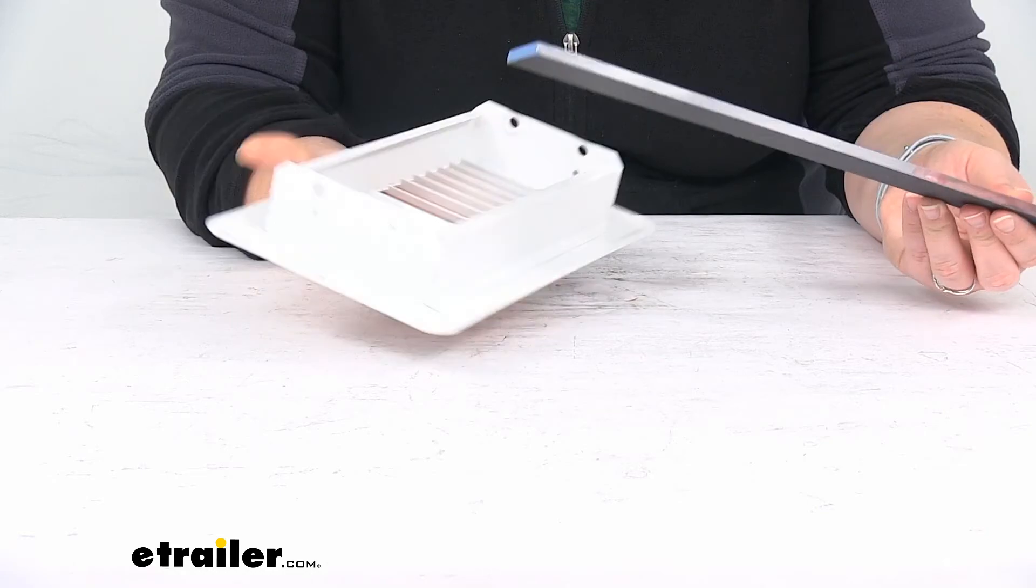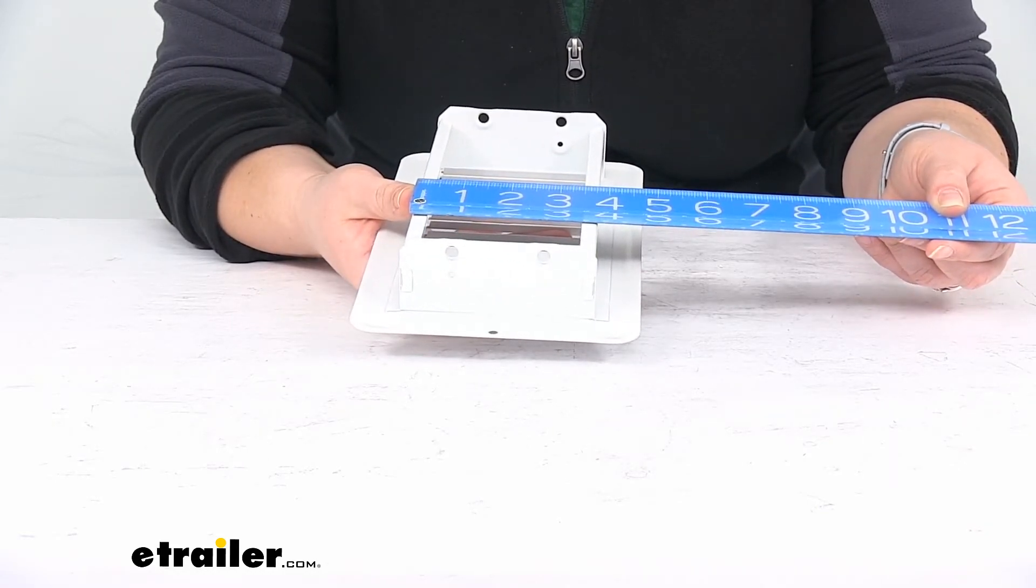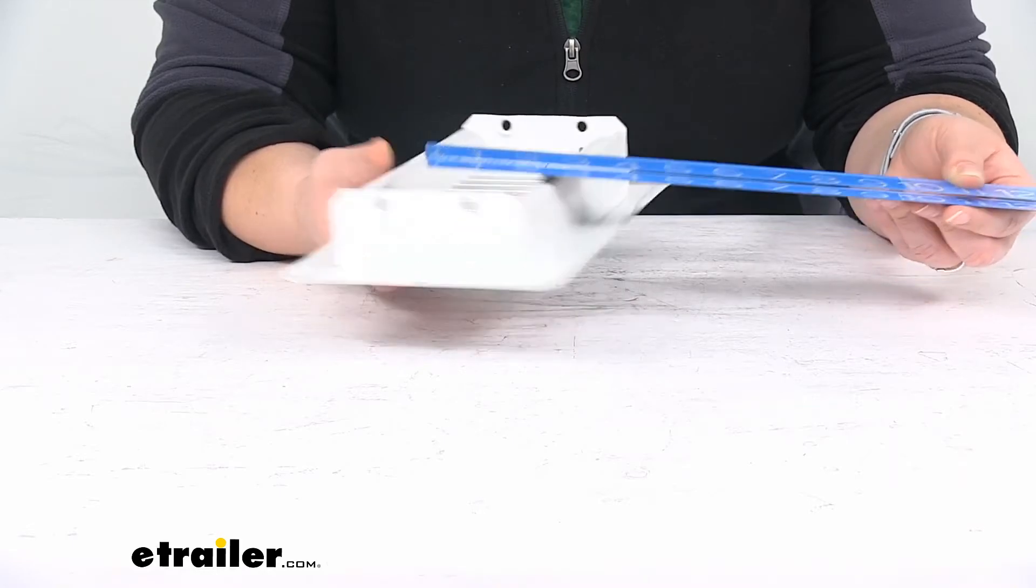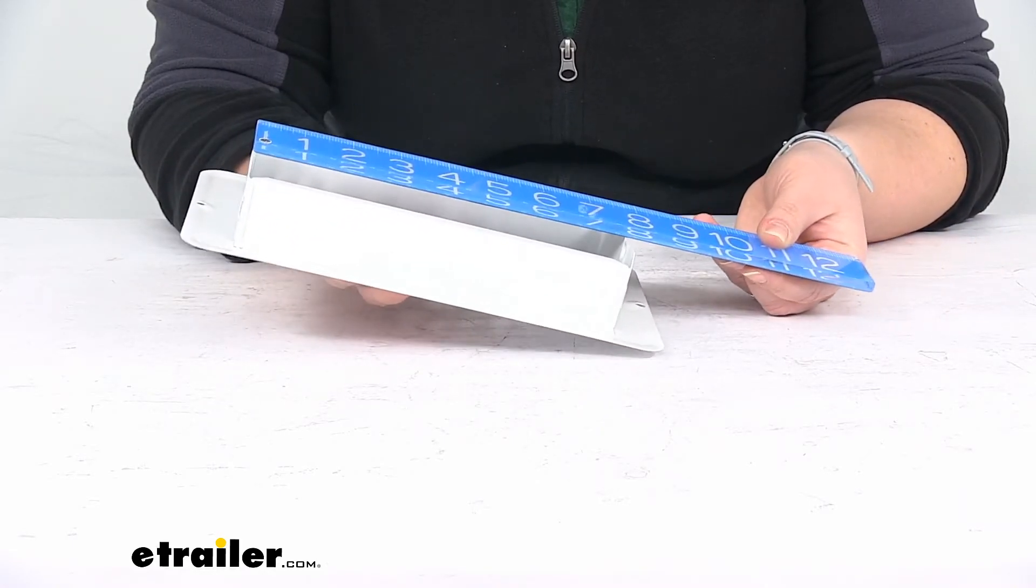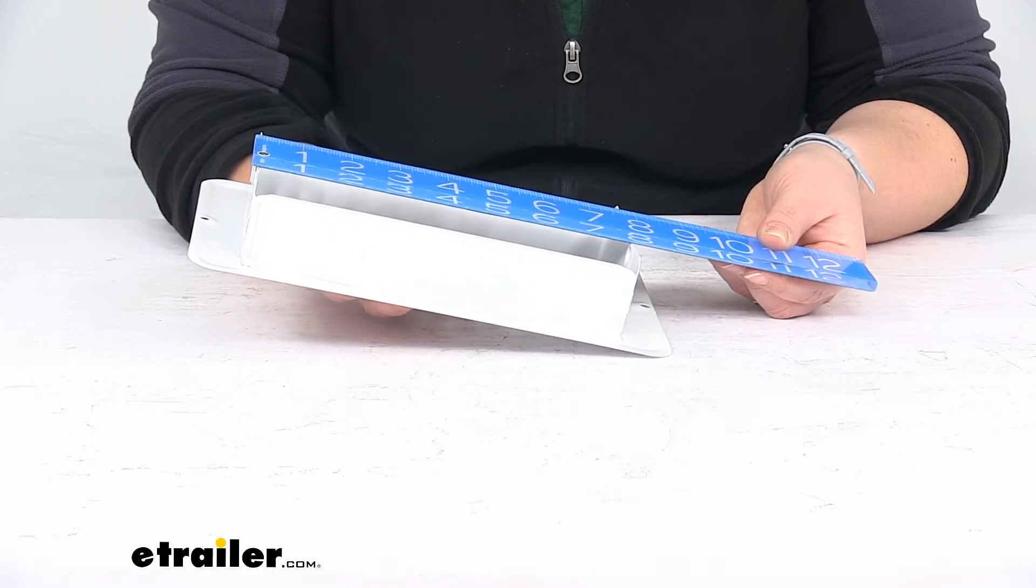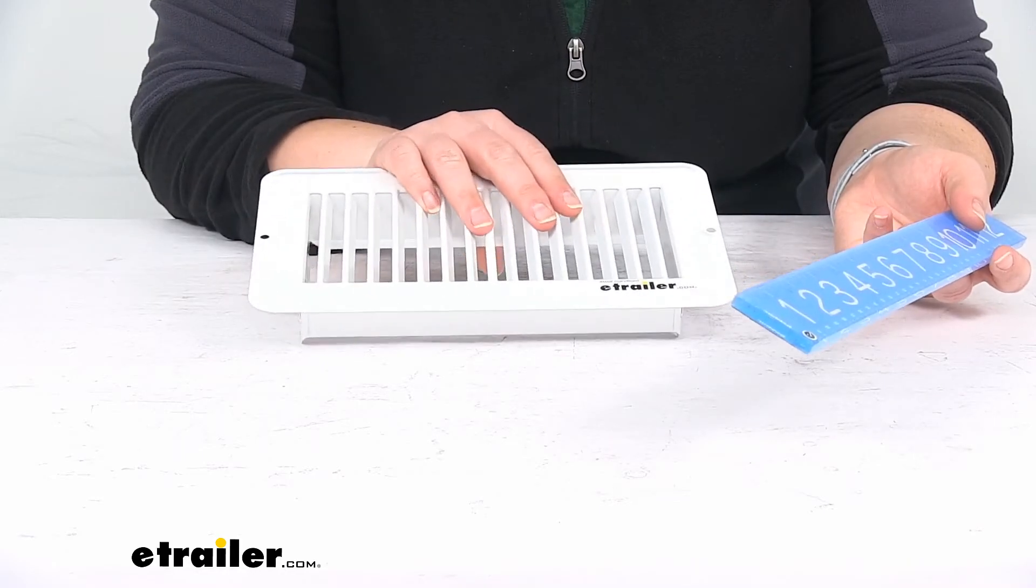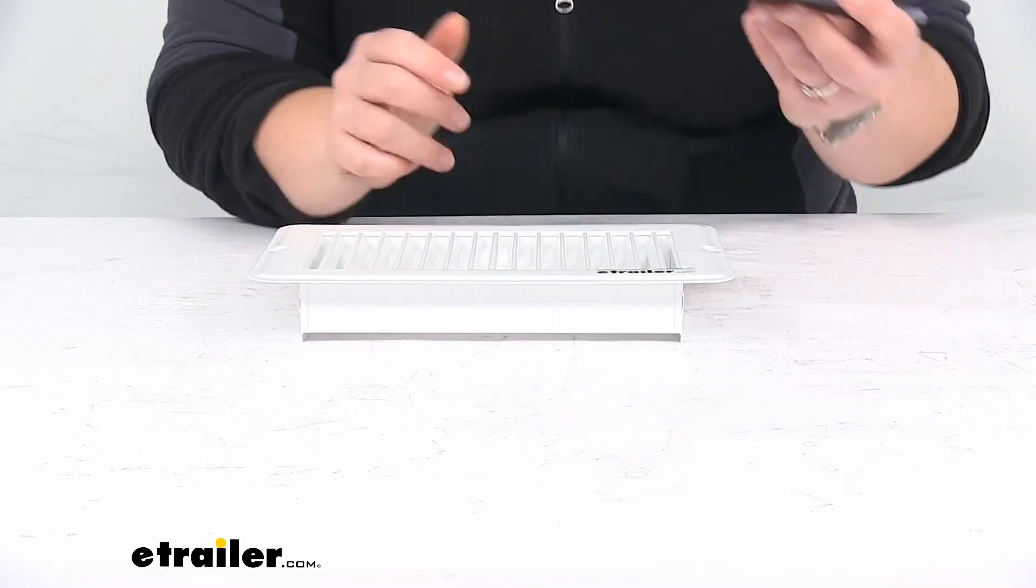For the cutout size it's about three and three-quarters inches wide and about seven and seven-eighths inches long. So if you have a four by eight inch opening this should fit right over it with no problem.